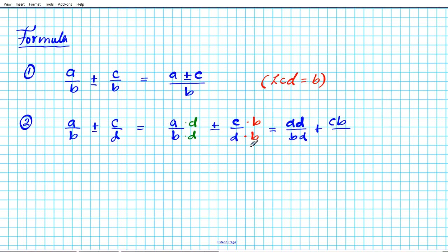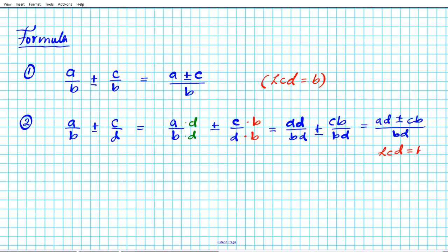You can use the commutative property of multiplication to write the denominator as BD. Now the denominators are identical, so you can combine the numerators: AD plus or minus CB over BD. In this particular setup the lowest common denominator is equal to BD. These are the two formulas we're going to be using to find the sum and difference of rational expressions.